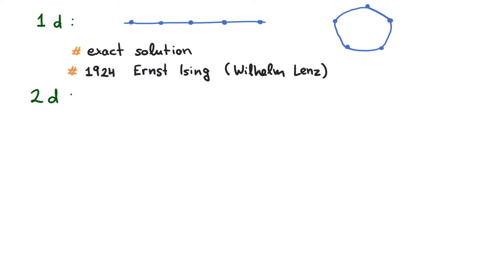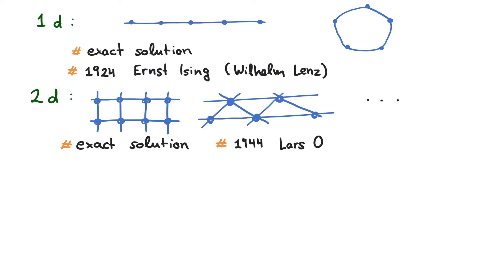In 2D, there are multiple ways to construct a lattice, which differ in the number of nearest neighbors. A simple way would be a 2D square lattice. For historic reasons, the exact solution for the 2D Ising model was given only much later in 1944 by Lars Onsager.